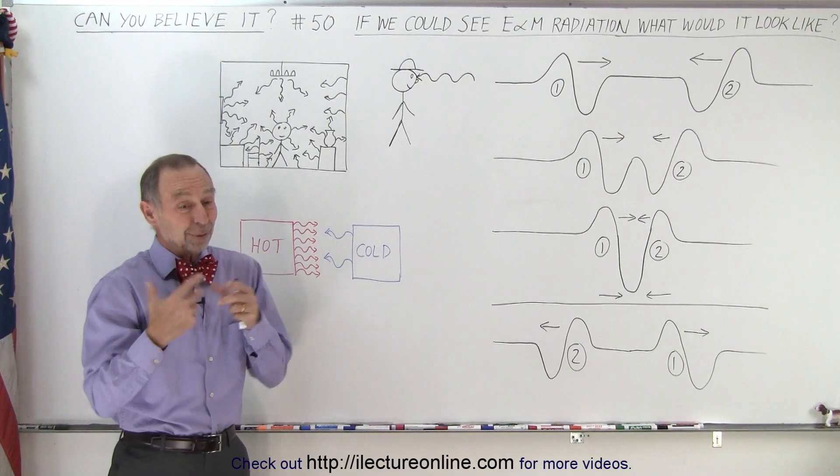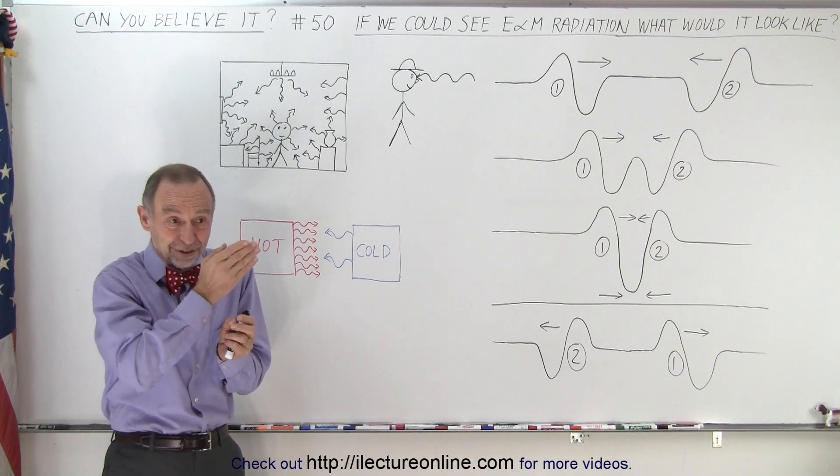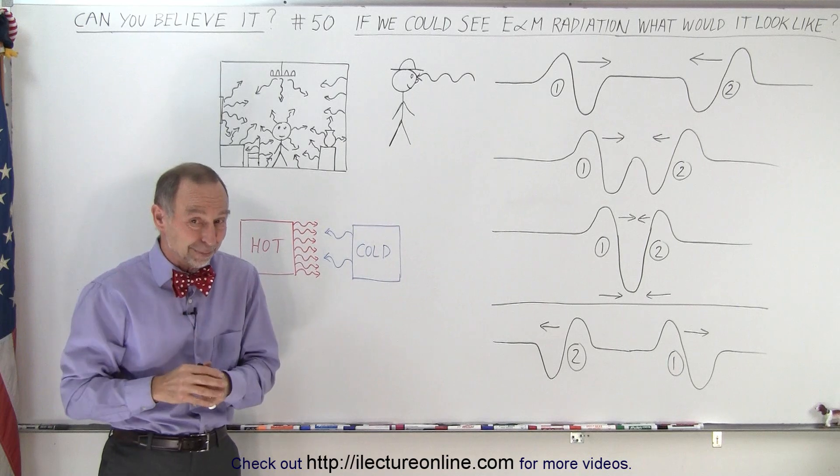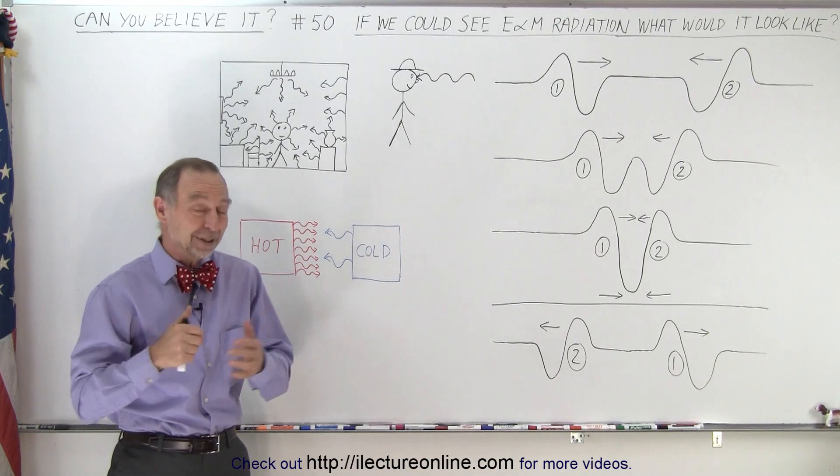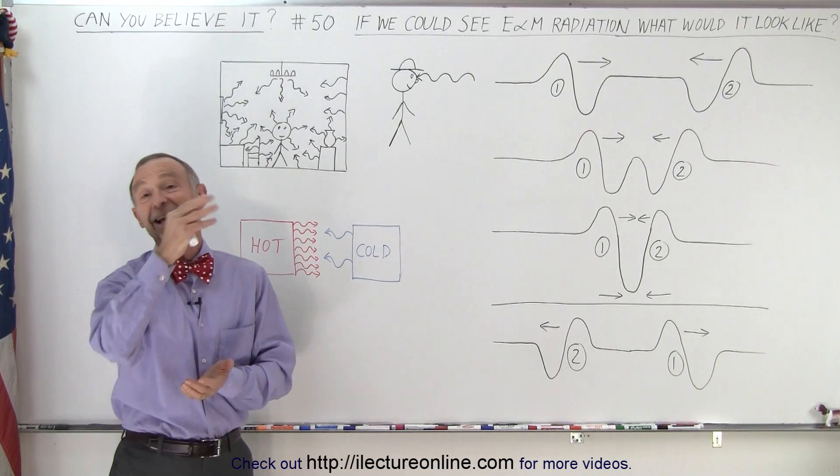But would our brains do different things? Would our brains actually turn them into specific types of colors like we've never seen before? Perhaps they would, but we don't have those brains and we can't ask the mosquitoes.